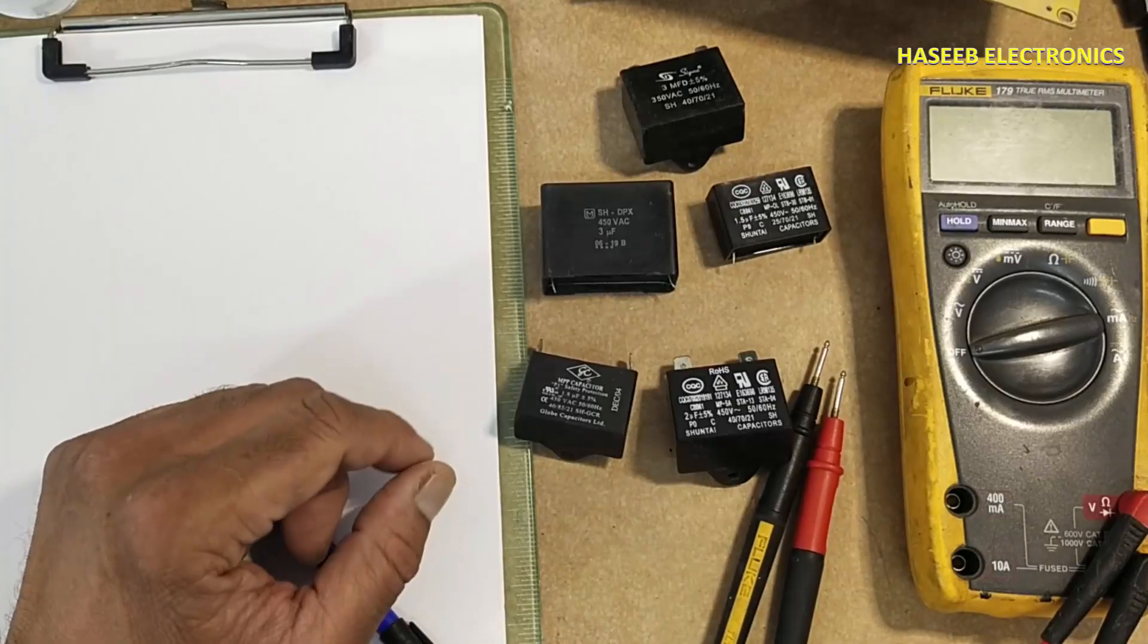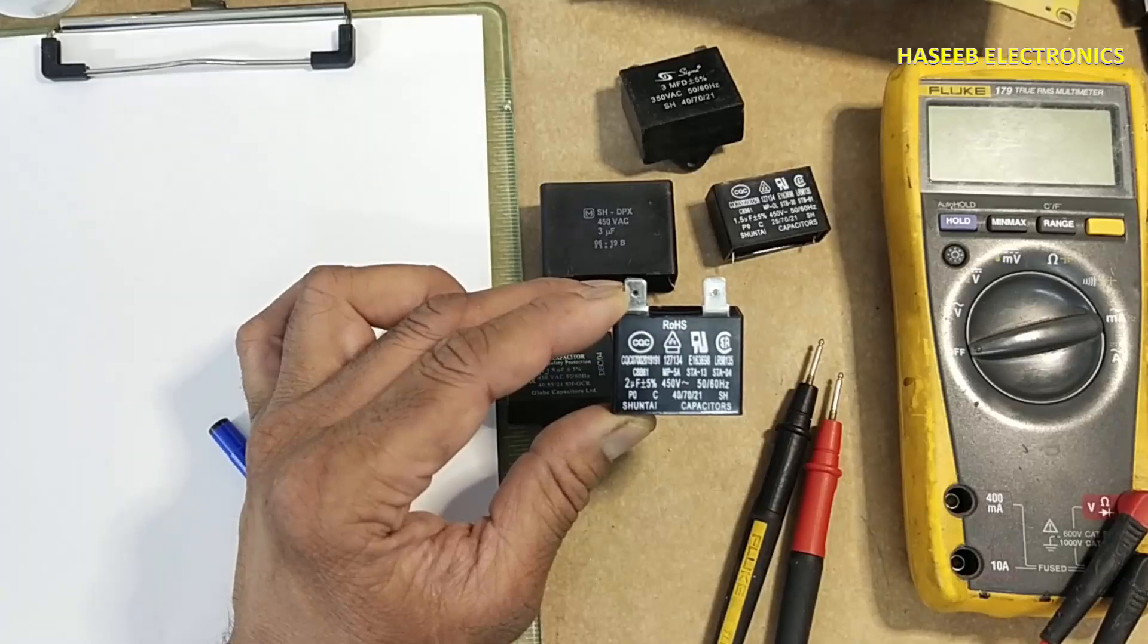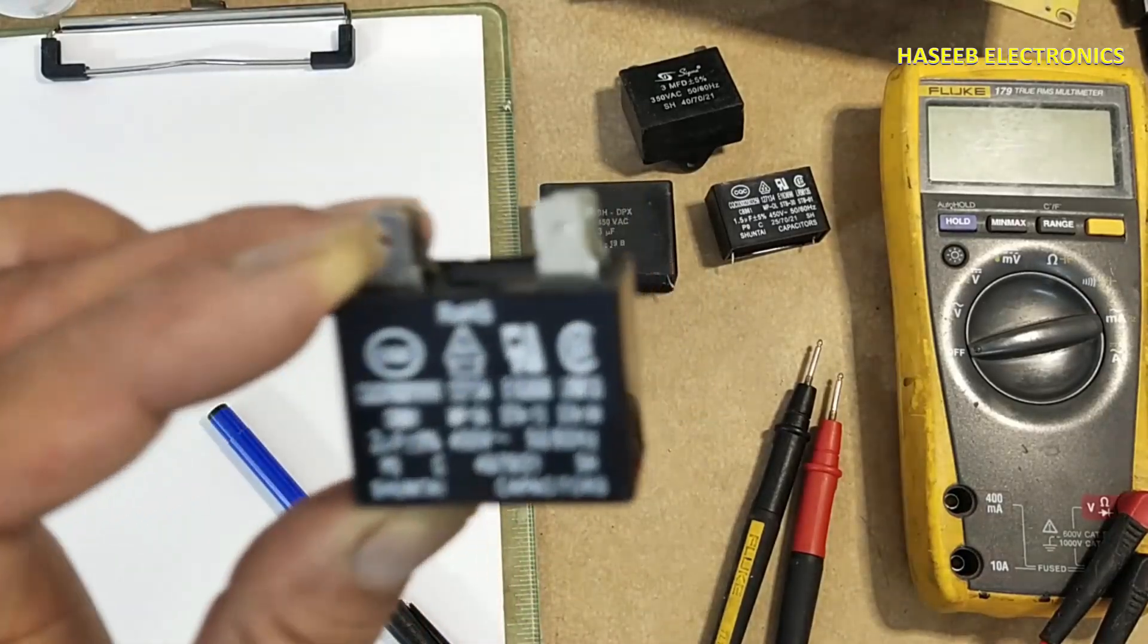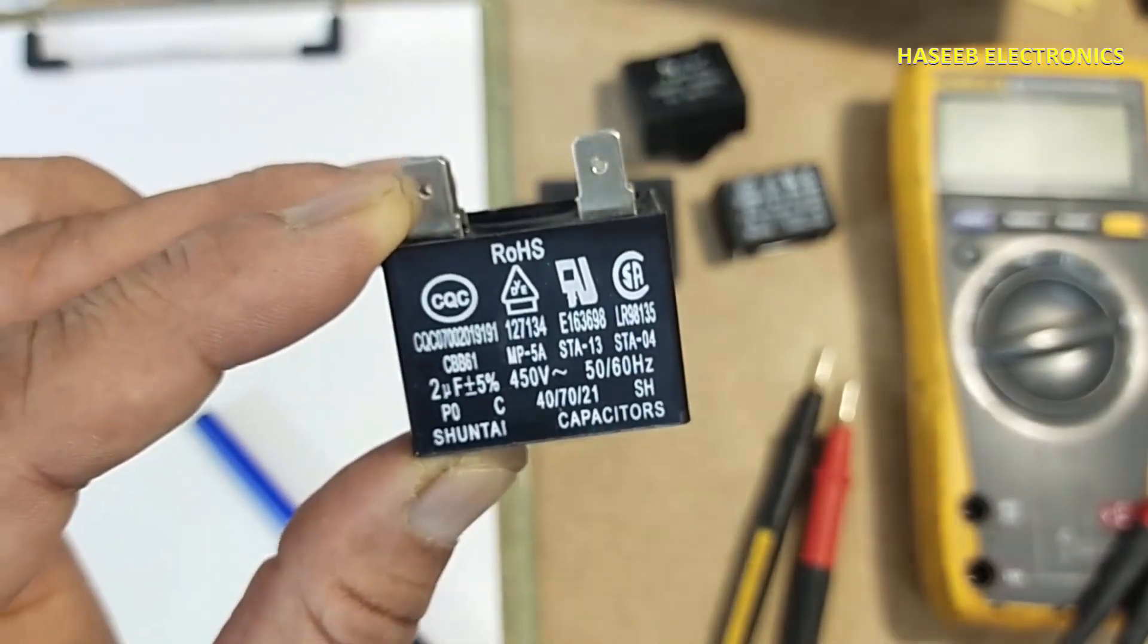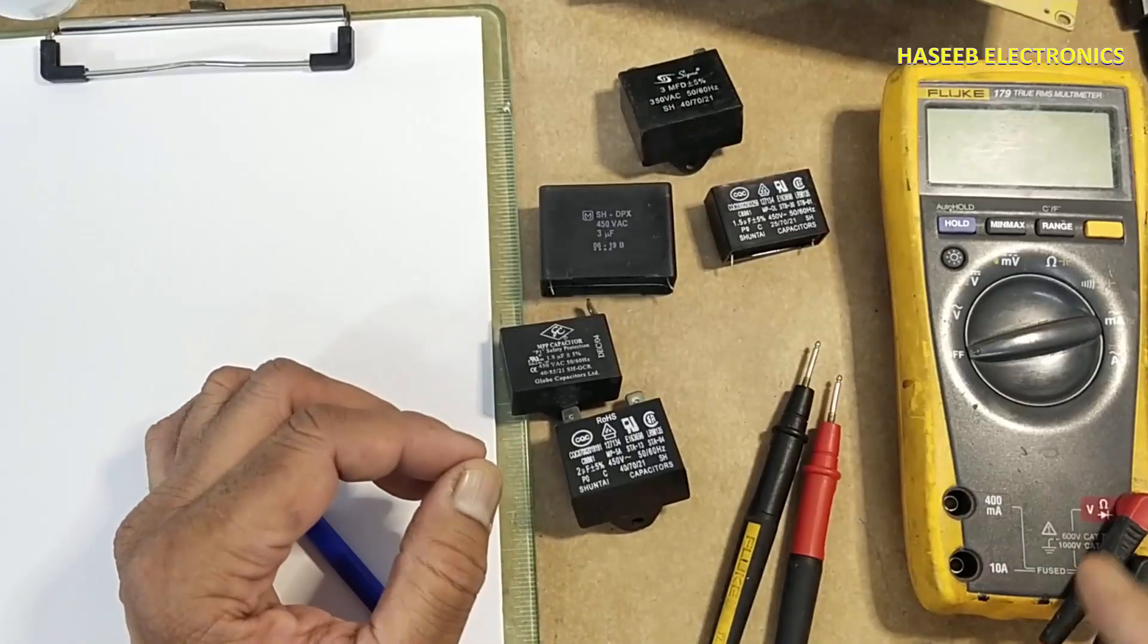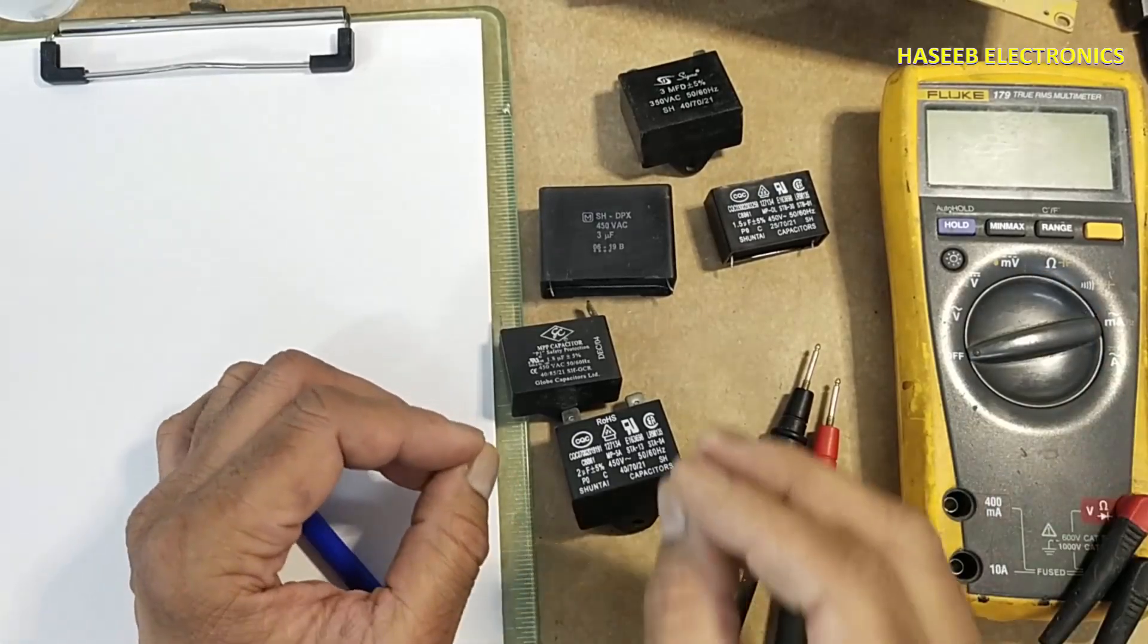Assalamu alaikum wa rahmatullahi wa barakatuhu, friends, welcome back to my channel. When we are testing non-polarized capacitors or AC capacitors, how can we say this capacitor is good or bad? Using the capacitance range on the multimeter, we will test these capacitors.